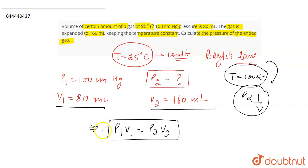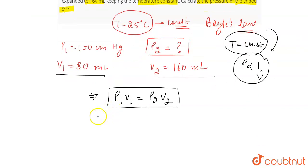This is the equation that we are going to use. Put the values and find out the value for P2. So we will now put the values here: P1 is 100 into V1 is 80 is equal to P2 we have to find out, V2 is 160. So P2 is going to be 100 into 80 divided by 160.